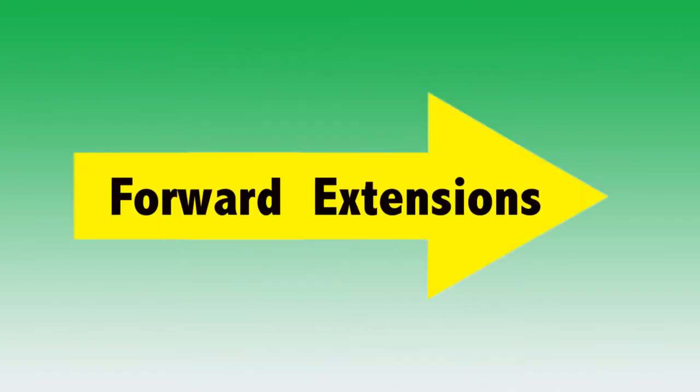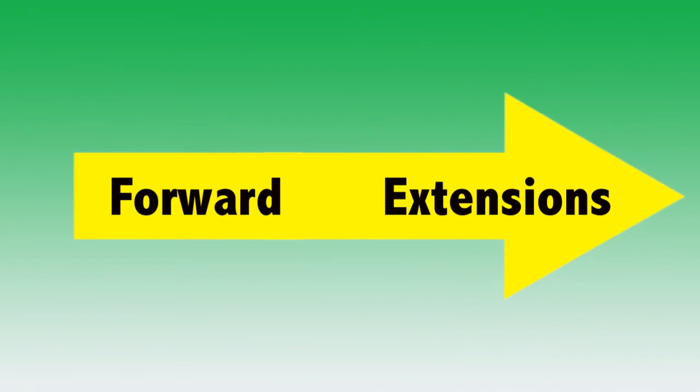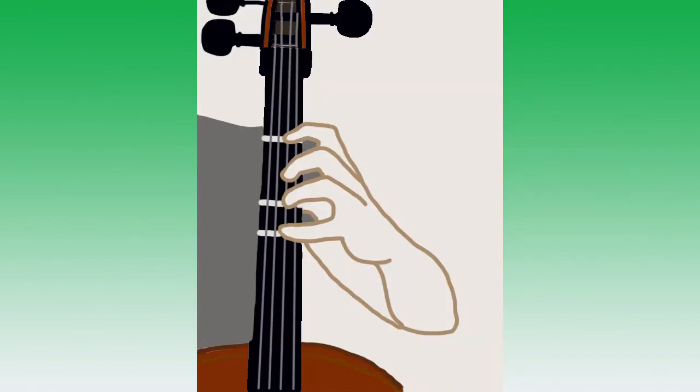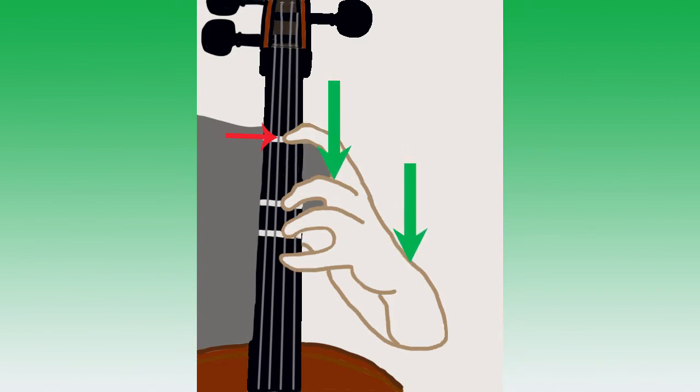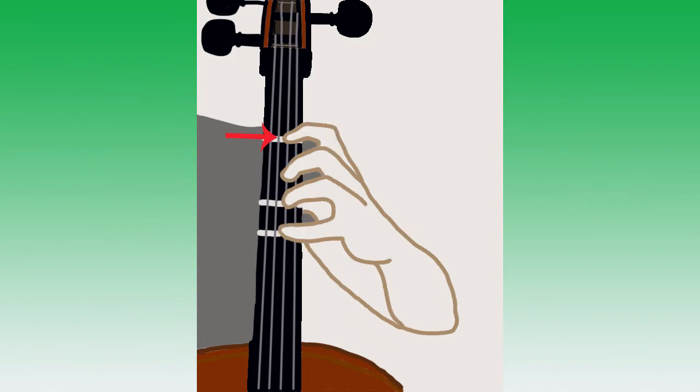But if you're all set, let's learn about forward extensions. In order to reach a half step higher, your first finger will stay where it is on the string and everything else, your thumb, hand, fingers, and arm will drop toward the bridge. Pause the video to try this movement a few times.